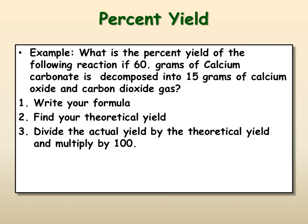For example of this, what is the percent yield of the following reaction if 60.0 grams of calcium carbonate is decomposed into 15 grams of calcium oxide and carbon dioxide gas? So to get percent yield, you're going to have to use stoichiometry to figure out how much you expect to make. And you also need to know your 15 grams that you actually do receive. So you need to write your formula. You need to find your theoretical yield. And then you take your actual yield and divide by that theoretical yield and multiply by 100.